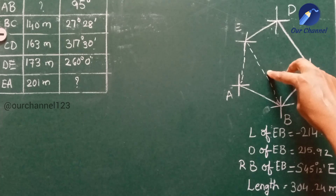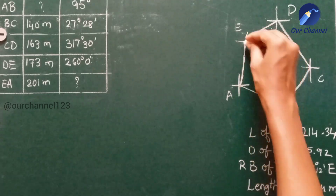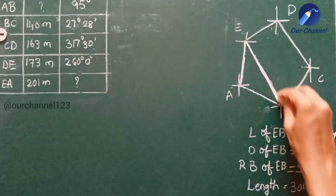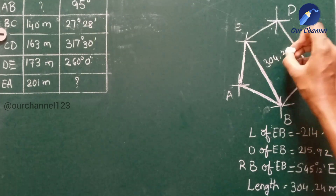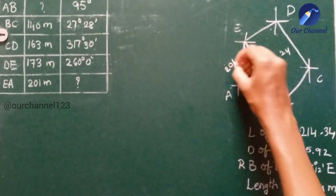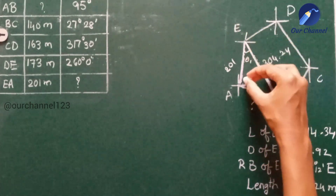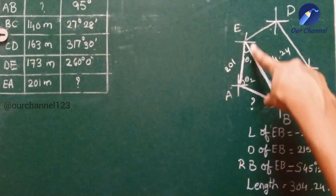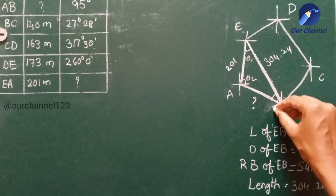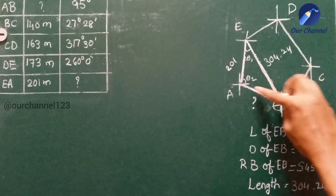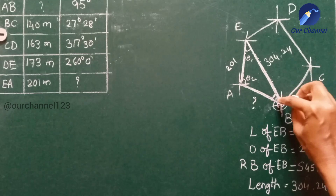We have the length of EB as 304.24 meters. To find the bearing of EA, we use triangle EAB. We know EB = 304.24 m and EA = 201 m; AB is unknown. Let θ1 be the angle at E and θ2 be another angle. To find angle B, we need the back bearing of EB and subtract the back bearing of AB from it.